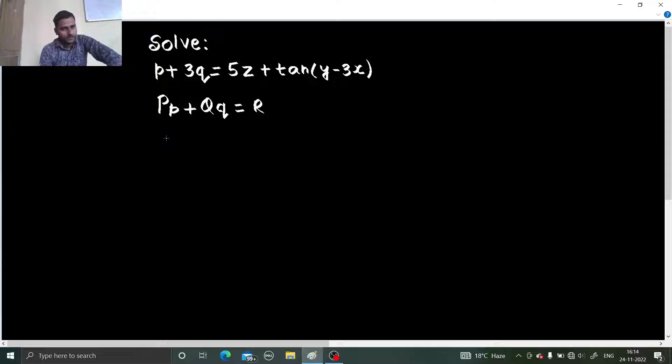Because this is of the form P*p + Q*q equals to R. So you can identify what is the capital P, the coefficient of small p which is 1, your capital Q is 3 and your capital R is 5z.